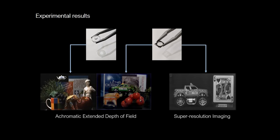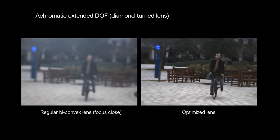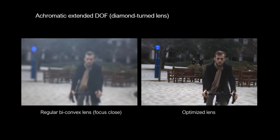We next show two sets of experimental results: achromatic extended depth of field and super-resolution imaging. For achromatic extended depth of field, we optimized the lens and reconstruction for image quality across a range of wavelengths and depths.